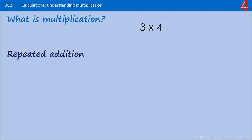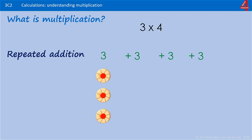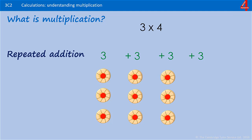If we look at 3 times 4, that's 3 add 3 add 3 add 3 — we're adding 4 lots of 3 together. So we have 3 biscuits, another 3 biscuits, another 3 biscuits, another 3. So we have 4 lots of 3 sets of biscuits, which is 12.